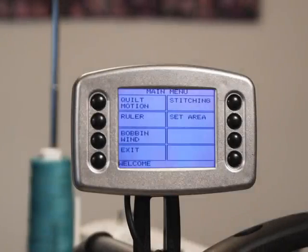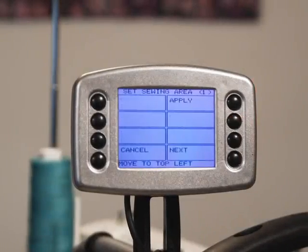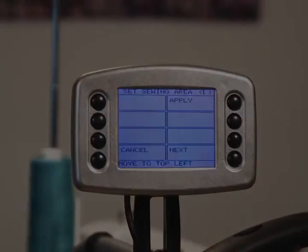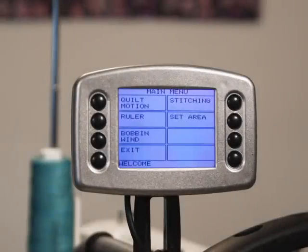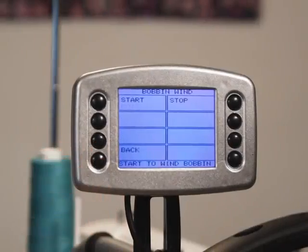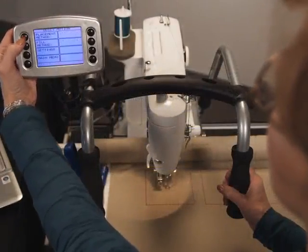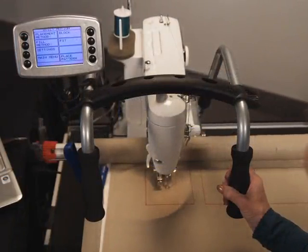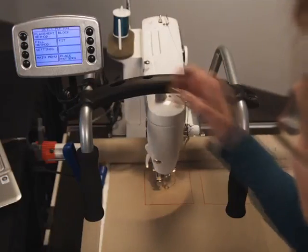The set area button allows you to define your overall work area as you just did. The bobbin wind button turns on your machine's bobbin winder. Now you are ready to place your pattern based on your selected placement method and fill method set earlier in your preferences at the computer.